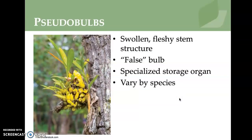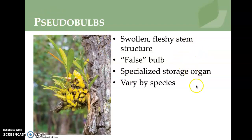Pseudobulbs — 'pseudo' meaning false — are swollen, fleshy stem structures that serve as specialized storage organs. They vary by species. An orchid growing on a tree is shown as an example.